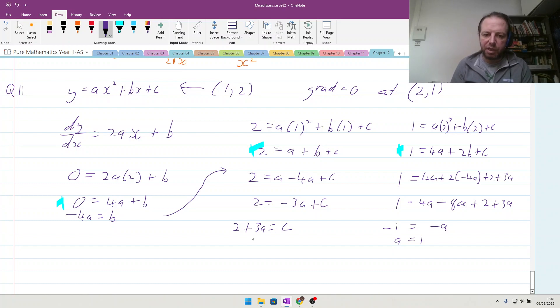Substituting it back into this value for c, I can say that 2 plus 3 times 1 equals c, so that's 5 equals c, and then substituting my value for a which is 1 in here, minus 4 times 1 equals b, minus 4 equals b, and so we have the equation y equals x squared because it's the 1 plus, or sorry, minus 4x and the c plus 5.